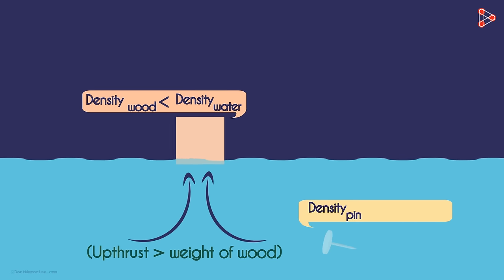But the density of a metal pin is more than the density of water. Though it looks tiny, there's more mass per unit volume within it as compared to water. Hence the up thrust of water on the pin is less than the weight of the pin.